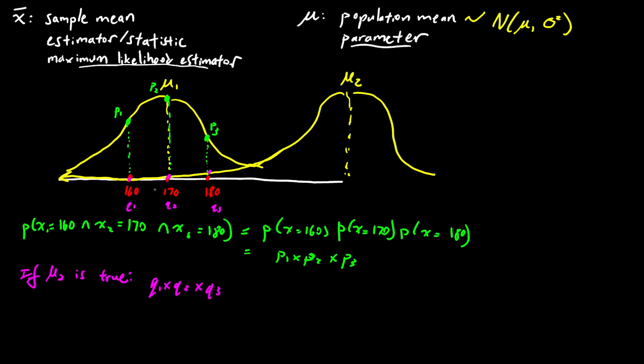And you can just sort of intuitively see here that these probabilities here are very low. So this is going to give us something very small. Whereas if we assume that this is the true population mean, the number that we get here, well, it's going to be definitely much larger in comparison to the number that we get here.